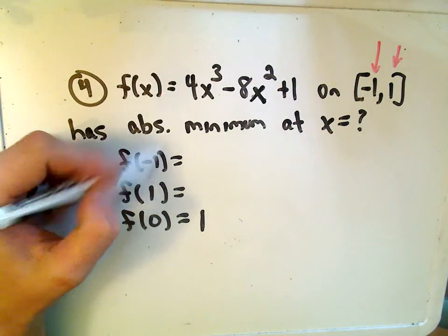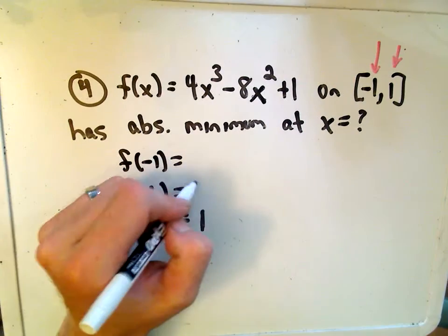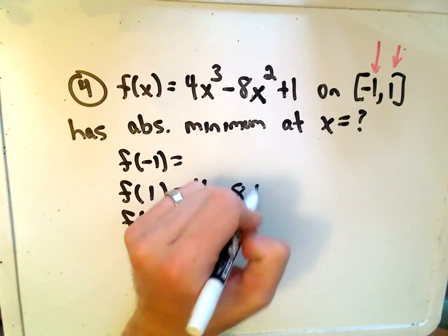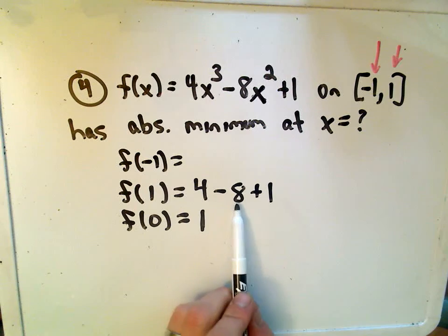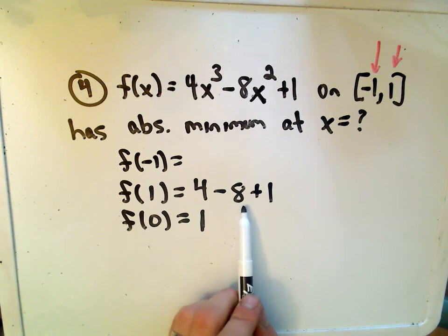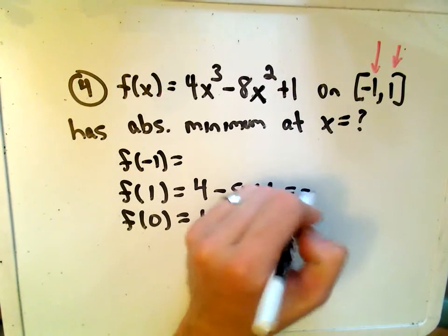If I plug in positive 1, we'll get 4 times 1 cubed, which will be 4 minus 8 times 1 squared, plus 1, well 4 minus 8 is negative 4 plus 1 is negative 3.